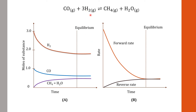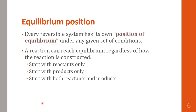The reaction does not stop — both directions still occur. Reactants produce products and at the same time products produce reactants, but the rates of change are equal, which means the amount of substance remains unchanged. The position where the forward rate equals the reverse rate is the equilibrium position. Every reversible system has its own position of equilibrium under any given set of conditions.